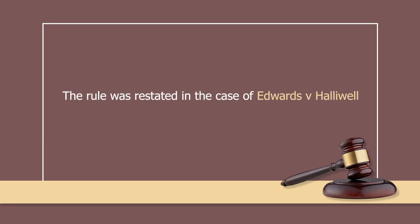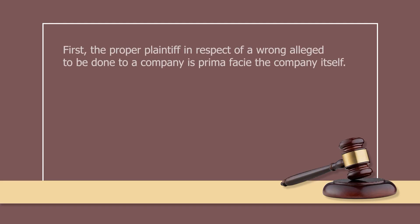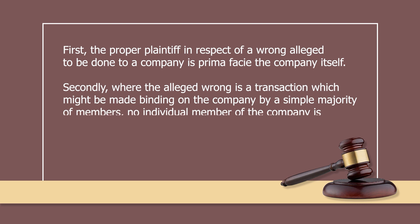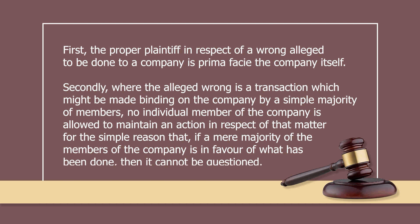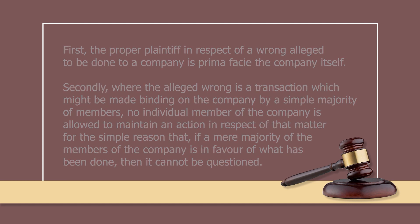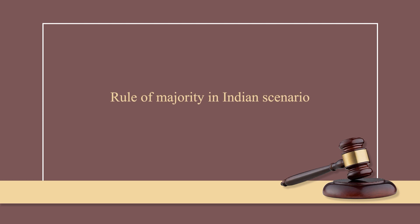The rule was restated in the case of Edwards versus Halliwell. Justice Jenkins observed: First, the proper plaintiff in respect of a wrong alleged to be done to a company is prima facie the company itself. Secondly, where the alleged wrong is a transaction which might be made binding on the company by a simple majority of members, no individual member of the company is allowed to maintain an action in respect of that matter, for the simple reason that if a mere majority of members of the company is in favour of what has been done, then it cannot be questioned.